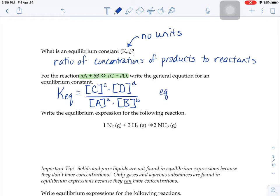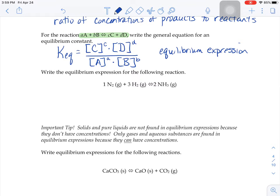So if we wanted to write one for this reaction, nitrogen plus hydrogen turns into NH3, which is a gas called ammonia. What we would do is put that ammonia in brackets, so we need to know the molarity of the ammonia gas. We would square it because of that two in the balanced equation. Is that two there?